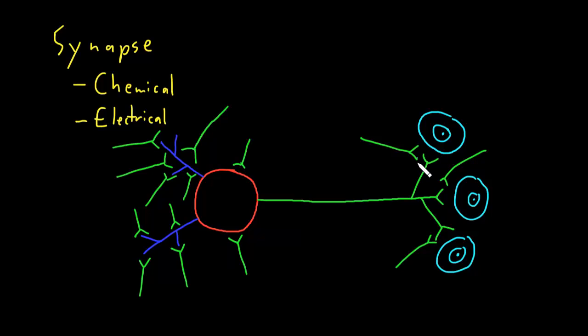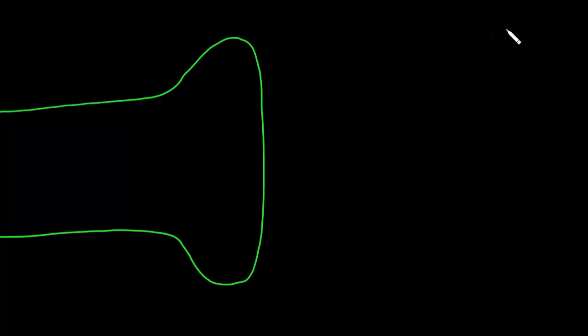But now let's zoom in and let's look at the structure of an individual synapse, like, for instance, this synapse right here. Let me start by drawing a big axon terminal. So I'll just blow up that axon terminal and make it really big here in green.